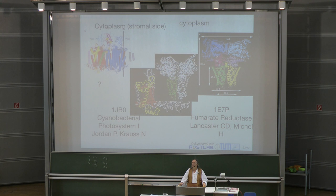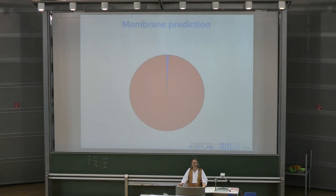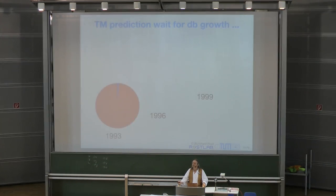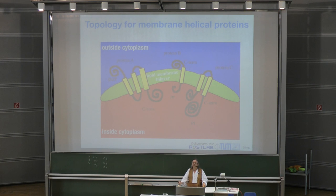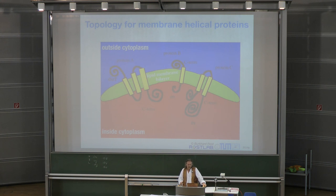That means when we do comparative modeling for membrane proteins, the fraction of all membrane proteins we experimentally know and can model by comparative modeling is very small. And when we look at it over time, nothing much is changing. The problem is a hard one, and we need to simplify and find solutions for at least some aspects.